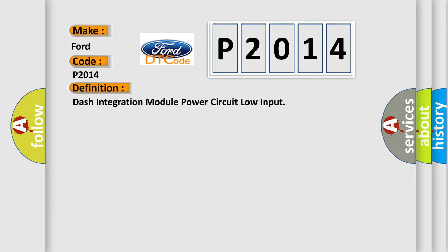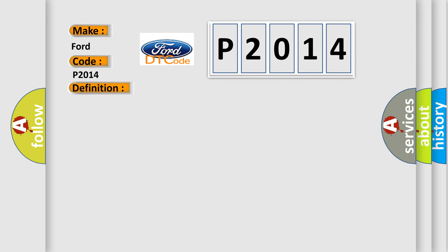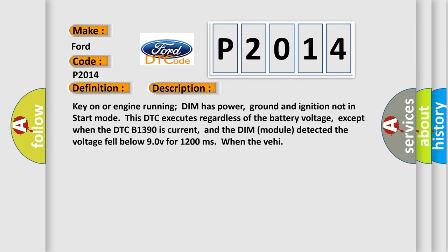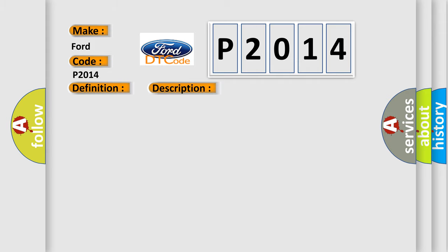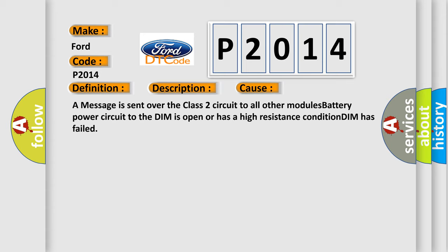Here is a short description of this DTC code. Key on or engine running, the DIM has power, ground, and ignition not in start mode. This DTC executes regardless of the battery voltage, except when DTC B1390 is current, and the DIM module detected the voltage fell below 9.0V for 1,200 milliseconds. This diagnostic error occurs most often when a message is sent over the Class 2 circuit to all other modules, if the battery power circuit to the DIM is open or has a high resistance condition, or the DIM has failed.